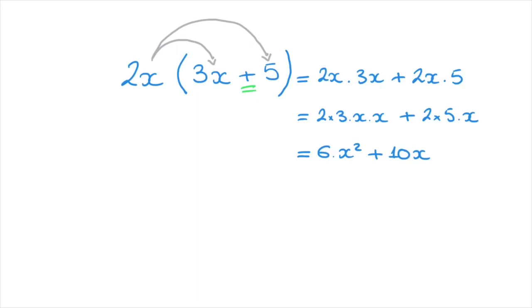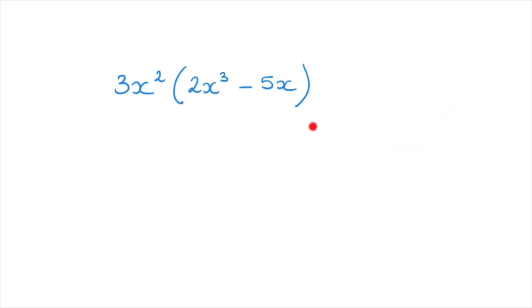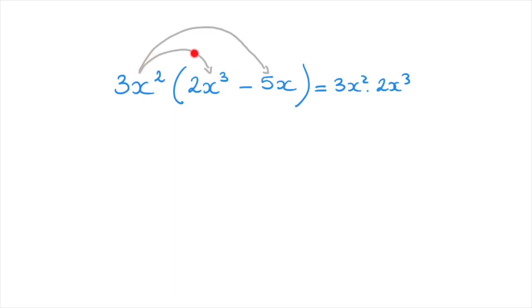Let's look at another example. Say we have to open up the parentheses shown here. Once again, we do this by distributing the factor — which in this case is 3x squared — to each of the terms inside. So this equals 3x squared times 2x cubed, distributing to the first term, and since the operation between the two terms is minus, we write minus 3x squared times 5x, distributing to the second term.